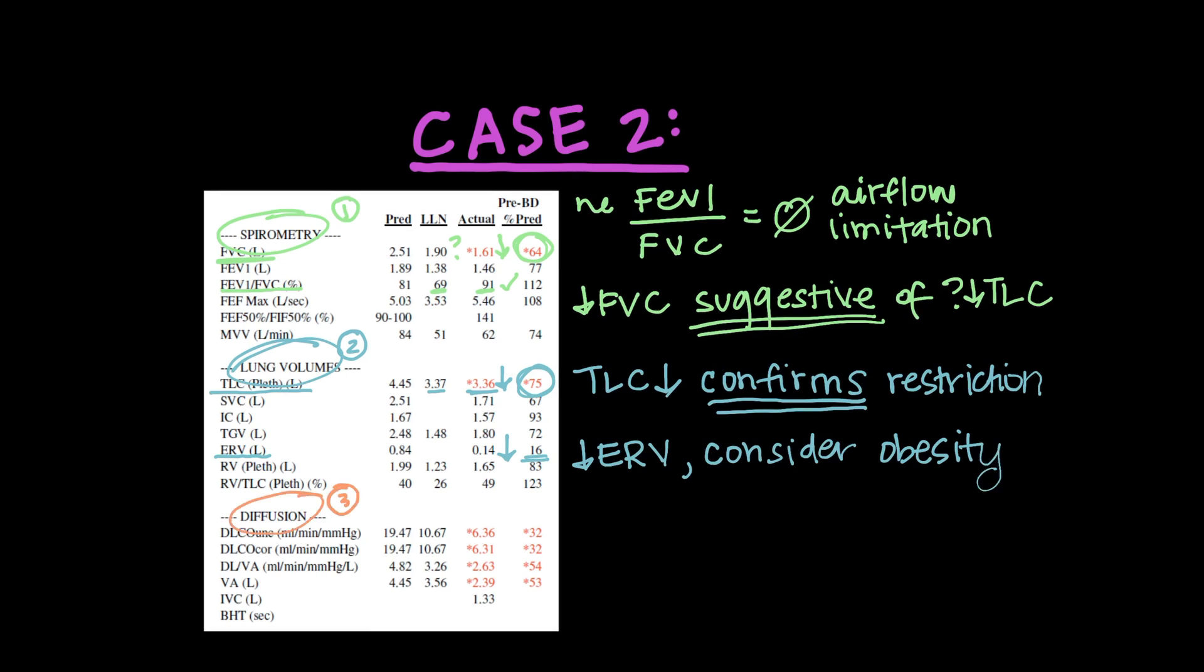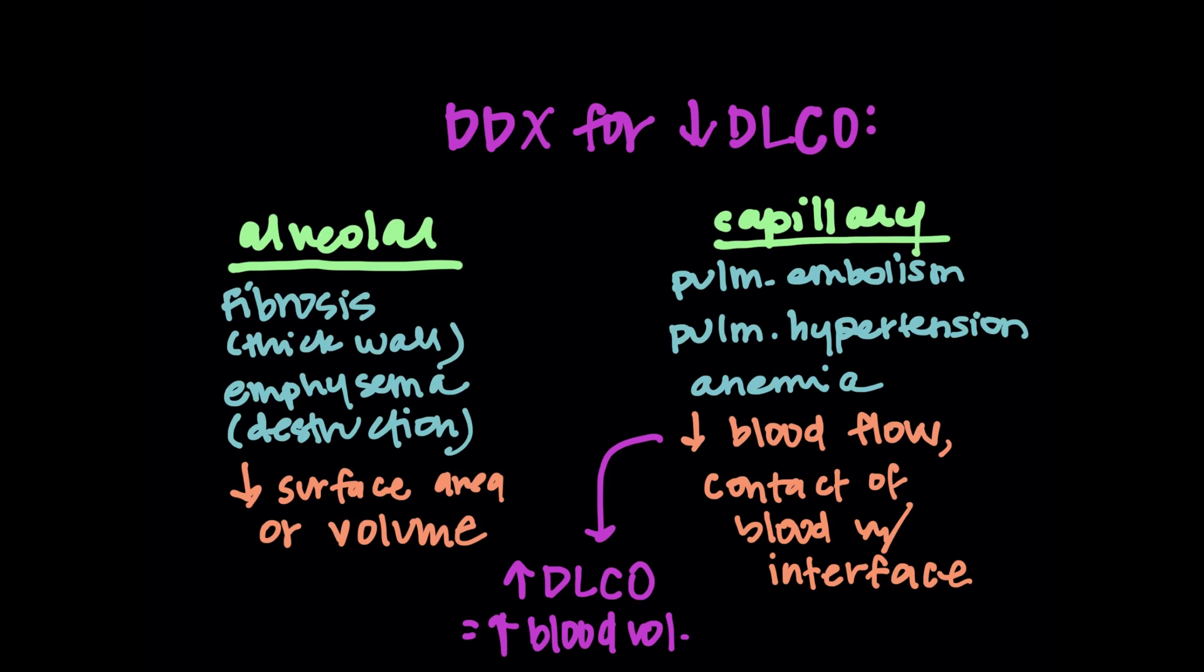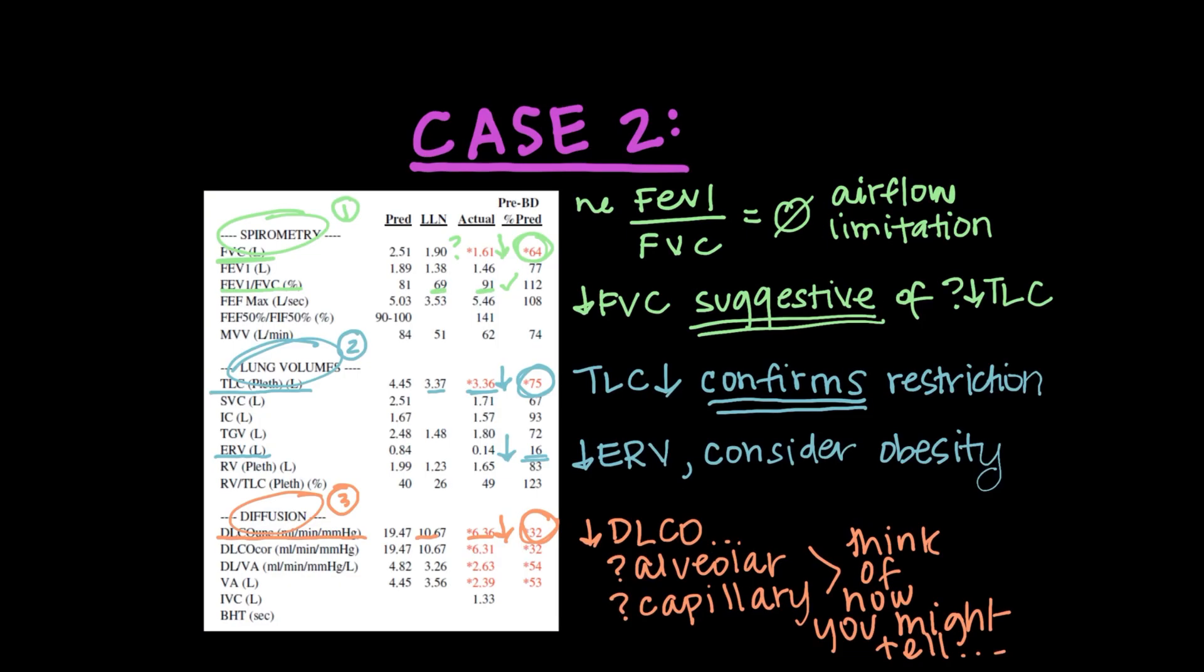The third thing that we always look at is the diffusion. Remember the DLCO. So here, this is significantly lower than the lower limit of normal. And so we can say that something's wrong with the diffusion. Is it alveolar or is it a capillary cause? Remember the differentials from the lecture on DLCO. So what do you guys think is going on and how would we be able to figure this out? So remember the differential for the decrease in DLCO, alveolar versus capillary. Things that are alveolar like fibrosis and emphysema, they affect your surface area or lung volume. Remember? Capillary issues like a pulmonary embolism or pulmonary hypertension or anemia should have nothing to do with your lung volume. So that's your clue for this patient. So remember, we said this patient had a low TLC, confirmative of restriction. So this patient must have an alveolar cause of the decrease in the DLCO.